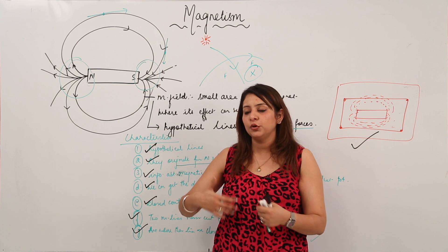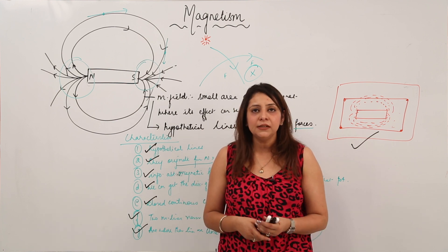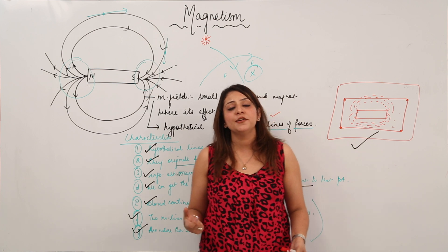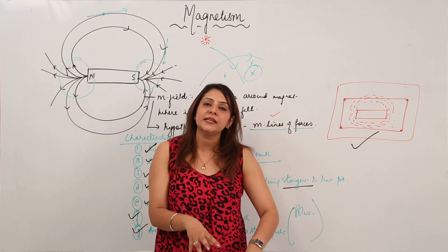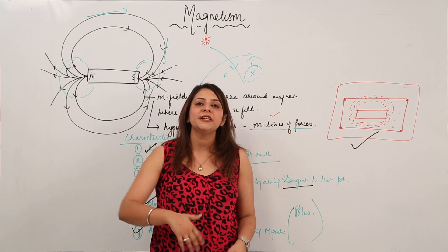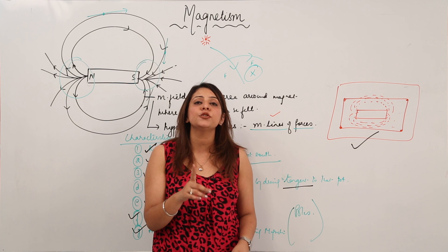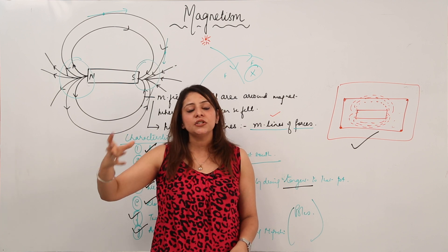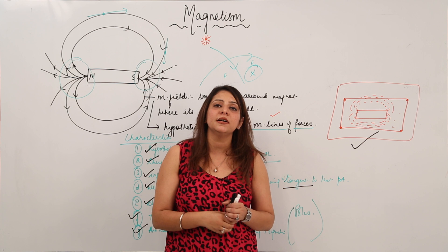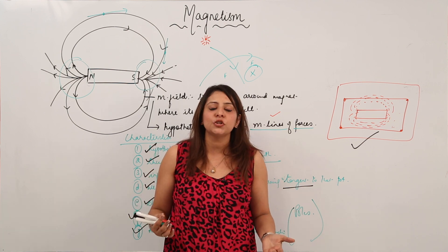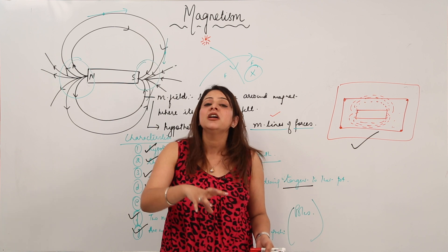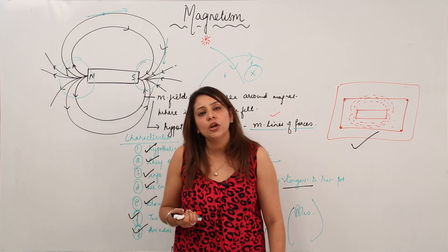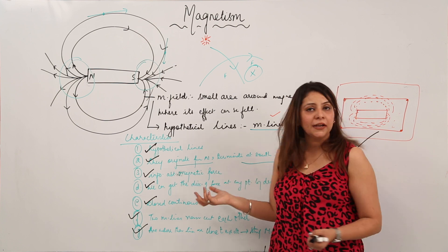Another piece of evidence that earth behaves as a magnet: scientists took a soft iron rod and buried it deep inside the earth. When they took it out after some time, it had become a magnet. This proved that the earth has a magnet in its core that magnetized the soft iron rod.